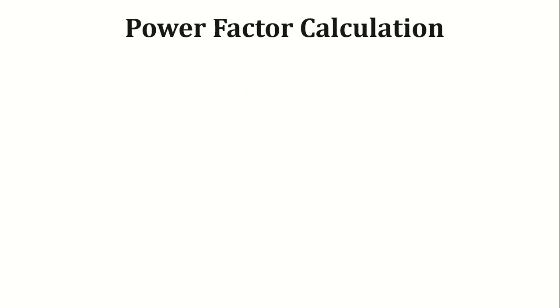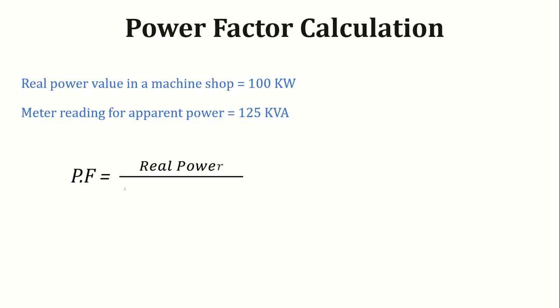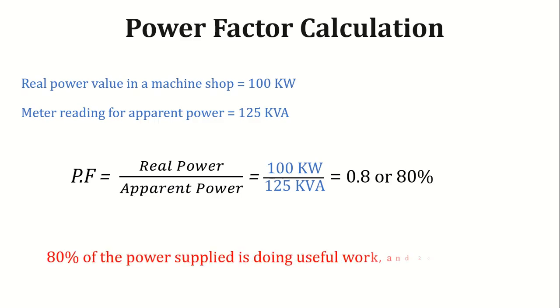To understand further, let's solve a simple numerical. We have a machine shop that uses 100 kW of real power, and the apparent power meter reads 125 kV amperes. Power factor equals 100 kW of real power divided by 125 kV amperes of apparent power. So the power factor is 0.8 or 80%. This means that 80% of the power supplied is doing useful work, and 20% is wasted.